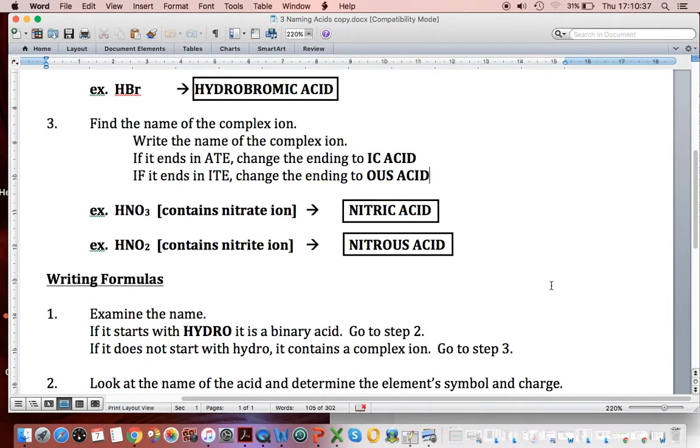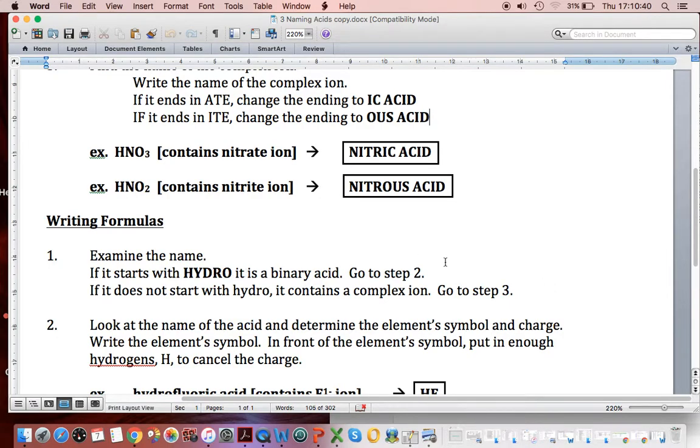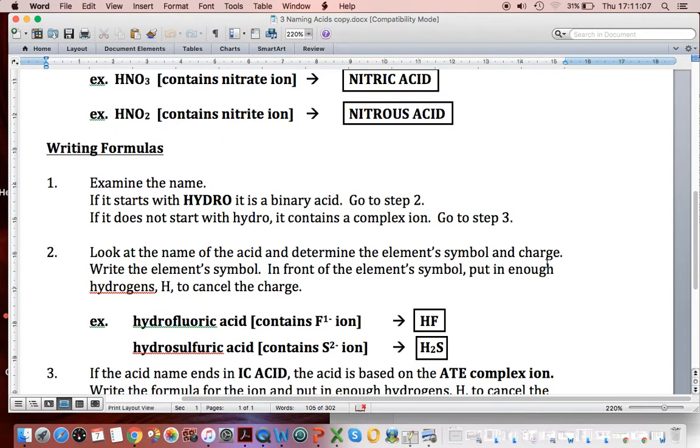Writing formulas, you look at the name. You're undoing what you did. If you see hydro, you know it's binary. And that just means you're going to put hydrogen in. You're going to look at the non-metal, and you're going to balance out the charge. And so if you had something like hydrofluoric acid, F is one minus, so we just need one H for it. If we had H2S, we're going to have to call it hydrosulfuric acid. And we're going to need two hydrogens to go with the one S. So those are a couple examples we've done very quickly here.